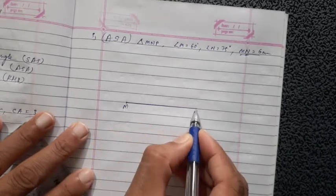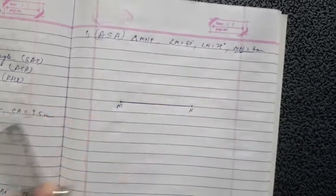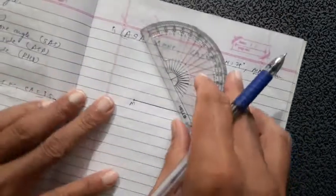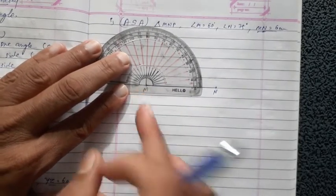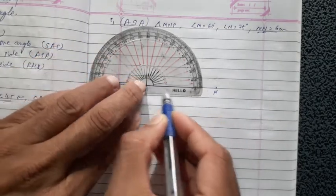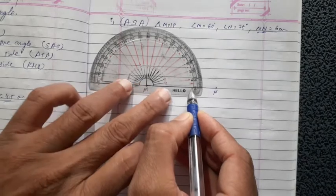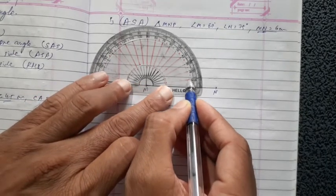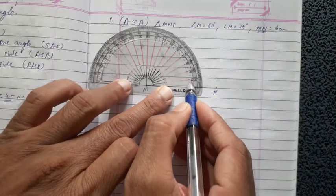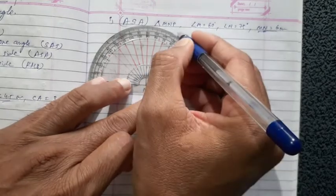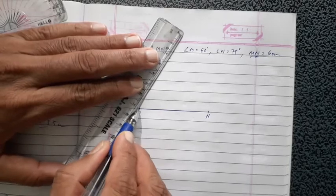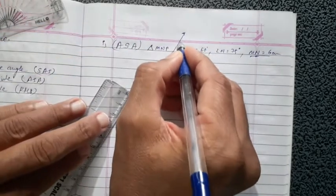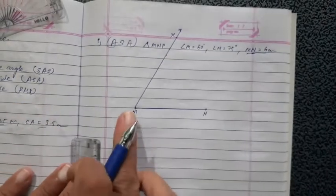Angle M is given — 60 degrees. Take the half circle (protractor) and put the middle point on point M. MN is in this direction, so read the downside numbers: 0, 10, 20, 30, 40, 50, 60 — mark at 60. Since triangle MNP is there, just take another point — suppose X — and draw a ray. Name it MX.